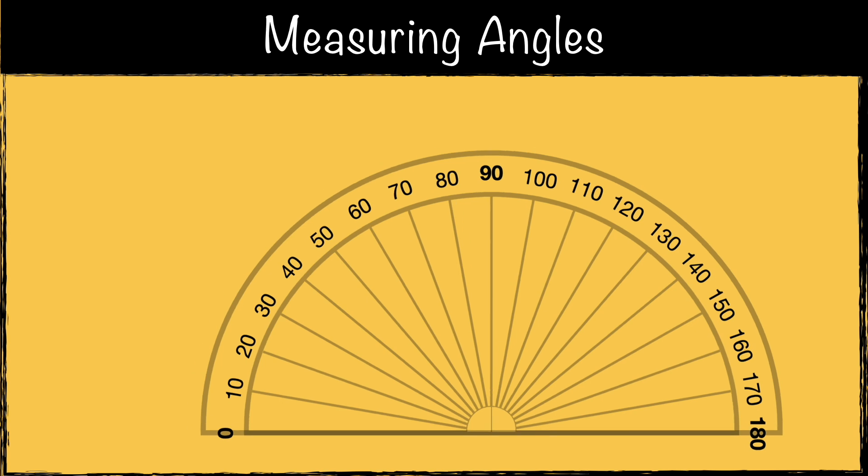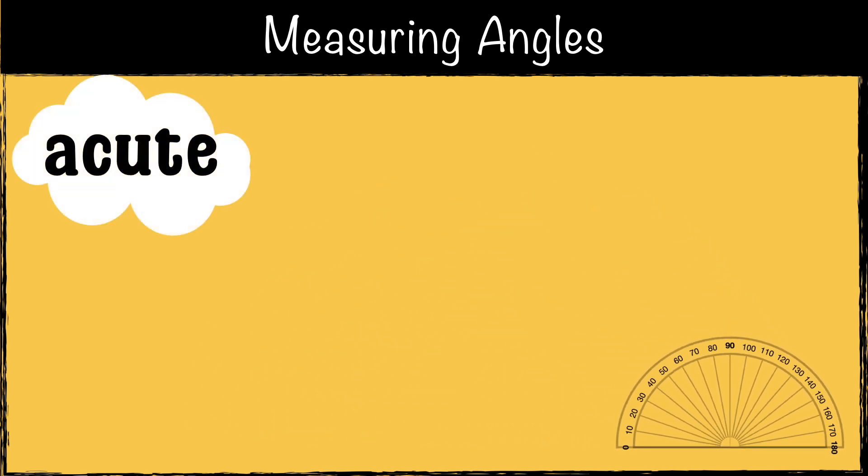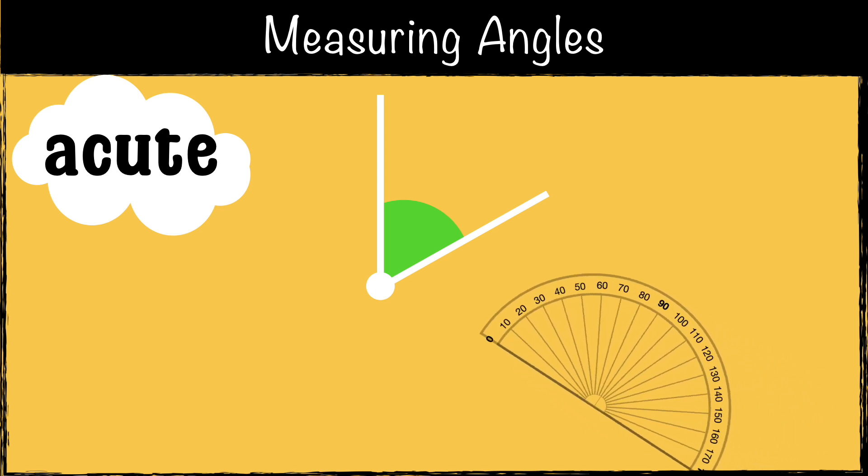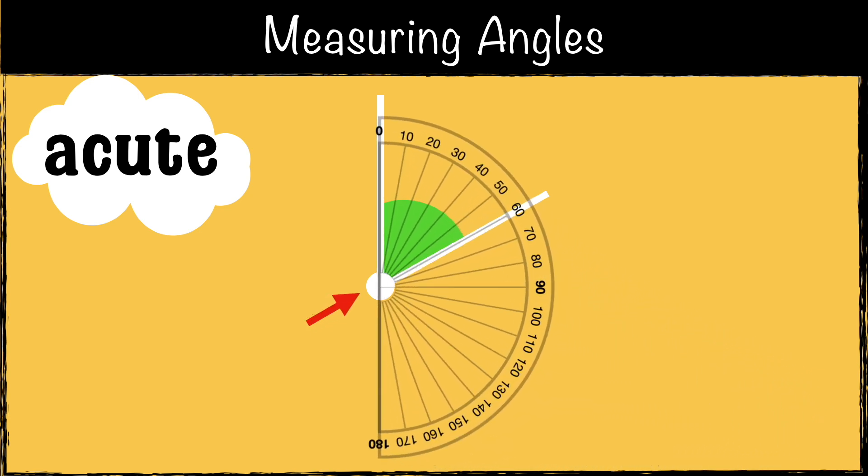To measure angles, we use a tool called a protractor. Let's start by measuring an acute angle. We know it's acute because we can see it's less than 90 degrees. But what is the exact angle? Place the center point of the protractor exactly where the two lines meet. Make sure the zero line on the protractor sits along one of the lines, and then finally you read the number on the protractor where the second line crosses the scale. So this angle is 60 degrees.